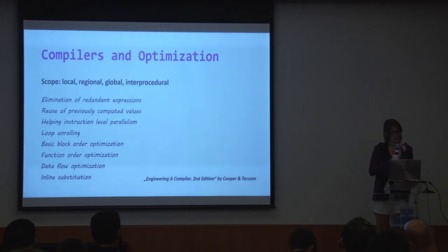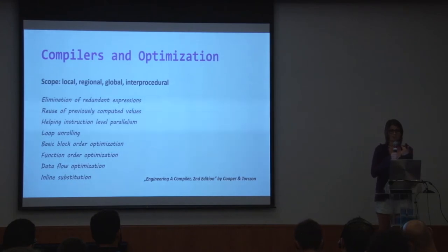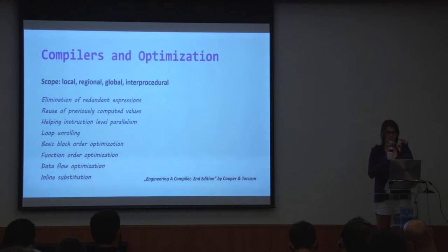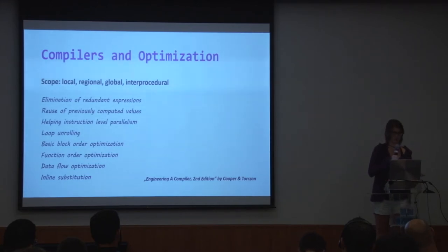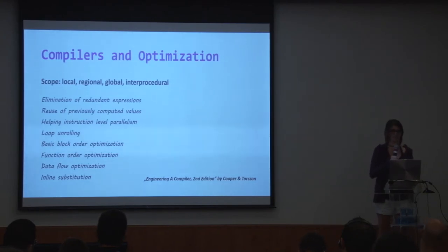Inline substitution of functions is also interesting: for very small functions we can eliminate a lot of calls by just copy-pasting the actual executable code of a function inline in the binary code, to save time on the call. That's just a very short summary of what optimizers can do — again I recommend reading the book, it's very interesting, and that's about everything I know about optimization settings.